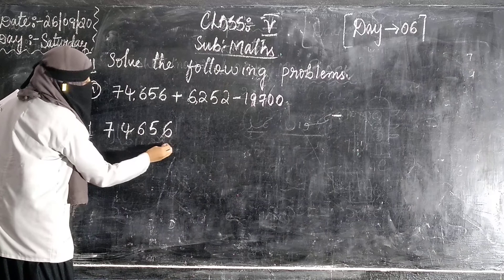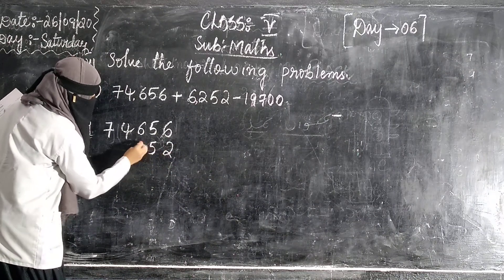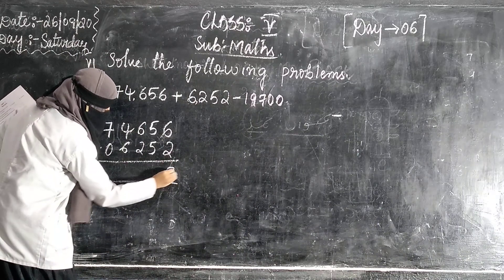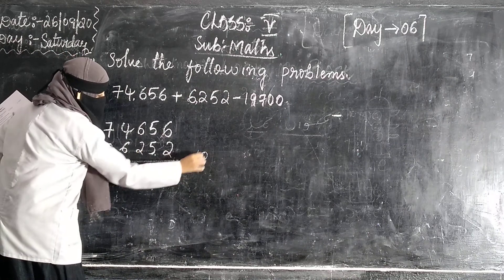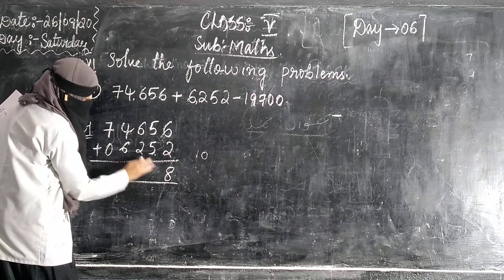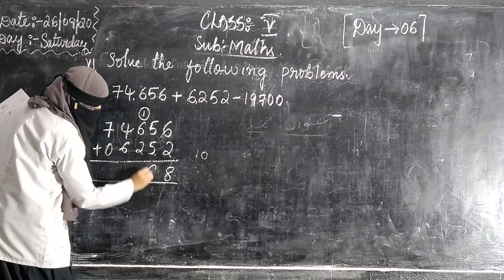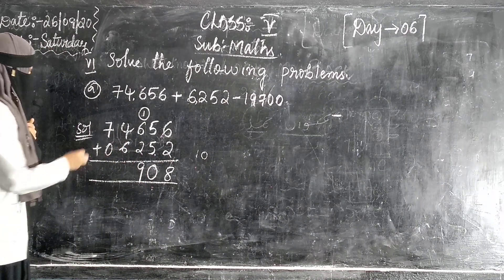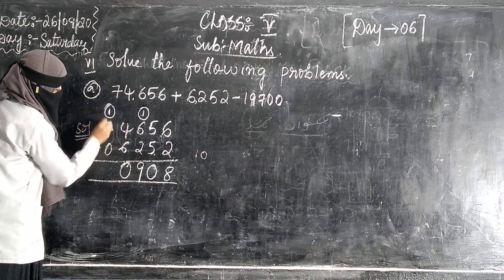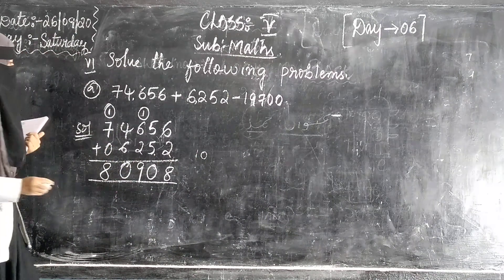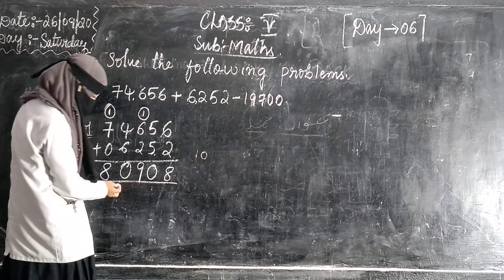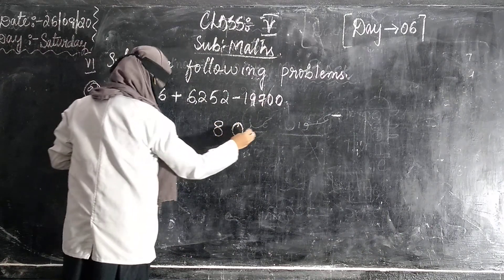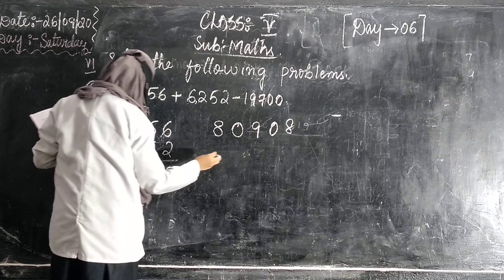74,656 plus 6,252. 6 plus 2, 8. 5 plus 5, 10, so we will write carry on the 6. 6 plus 7, 8 plus 1, 9. 6 plus 4, again 10. 7 plus 1, 8.